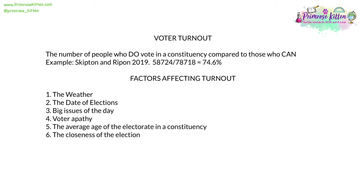Voter turnout is the number of people who do vote in a constituency compared to all of those who can. To take an example, in the Skipton and Ripon constituency at the 2019 general election, 58,724 people of a possible 78,718 voted — a turnout of 74.6%, which is quite high. Many factors affect turnout, such as the weather (turnout tends to be lower if the day is terrible), the date of the election (turnout is generally slightly lower in winter), whether there are big issues on the day such as Brexit, voter apathy and levels of disengagement with politics, the average age of the electorate (older people tend to be more likely to vote), and how close the election is — in a close election, where it could go either way, turnout tends to be higher.